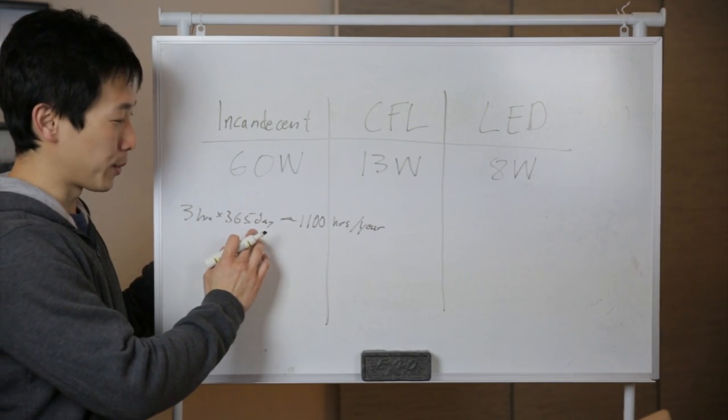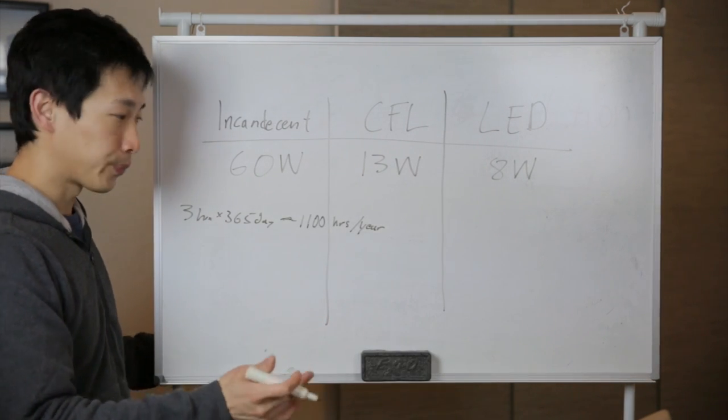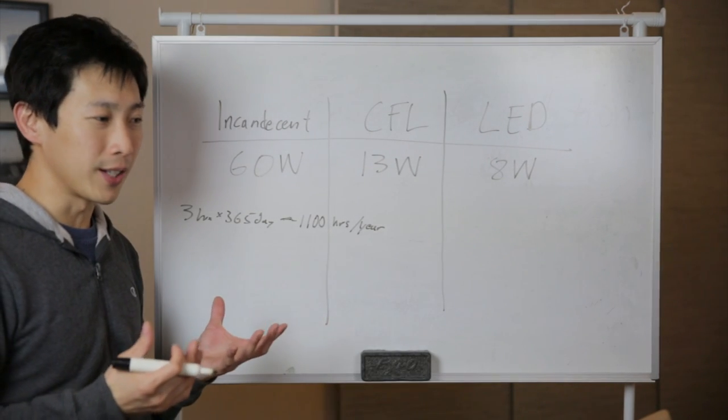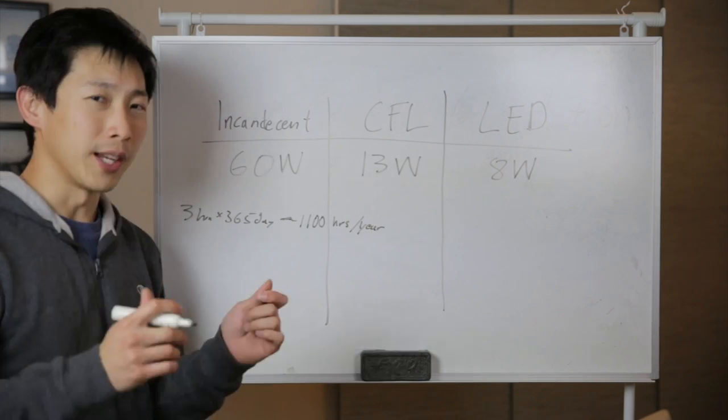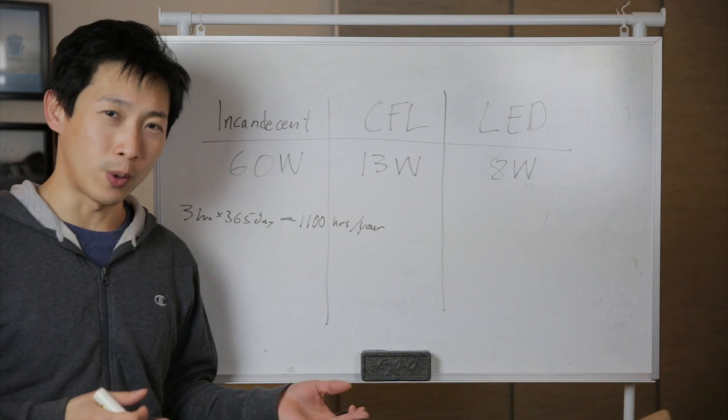Multiply it by the number of days in the year, 365, it's about 1100 hours per year. Now your electricity bill comes in a metric called kilowatt hours. It means if you burn 1000 watts for 1 hour, it's 1 kilowatt hour.